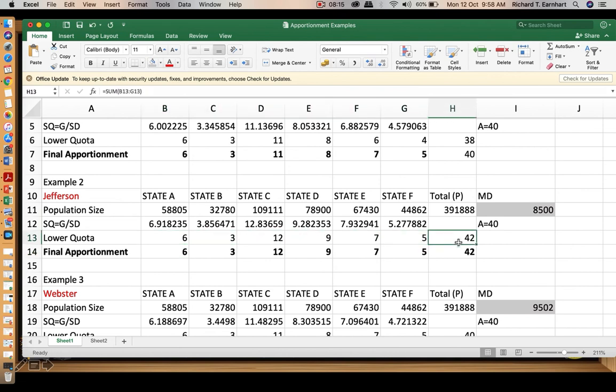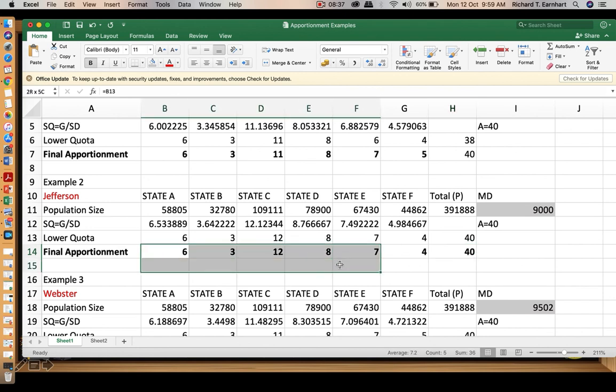You check, now, if the total will be 42. What we need here is 40. So we adjust, we choose another value of MD, let's say 9,000. This gives you the total 40. Therefore, this will be your final apportionment.